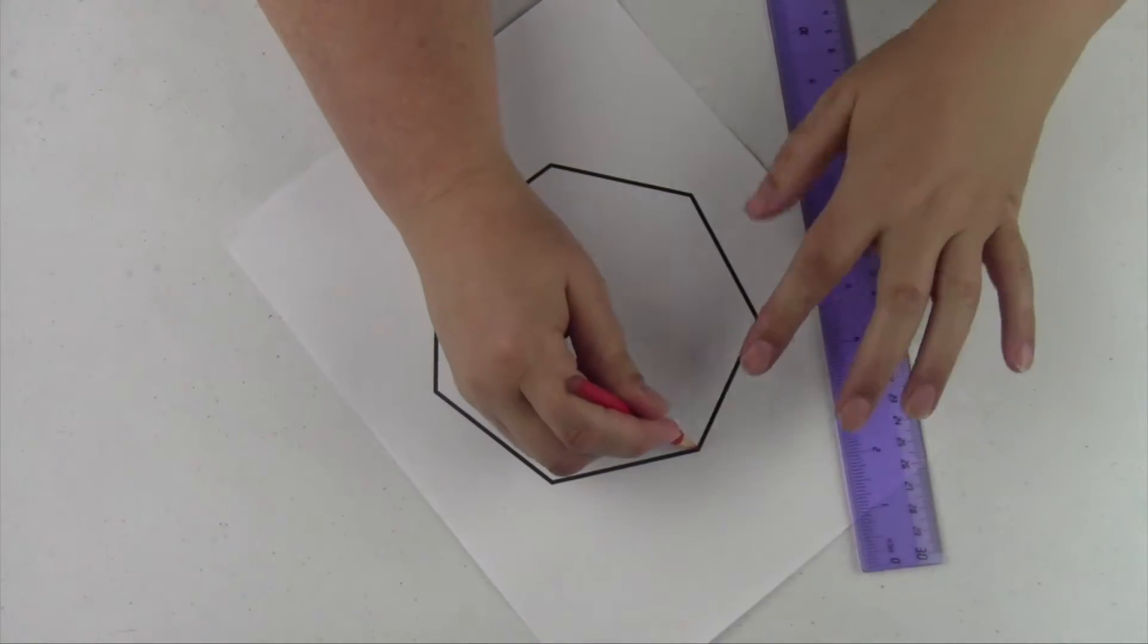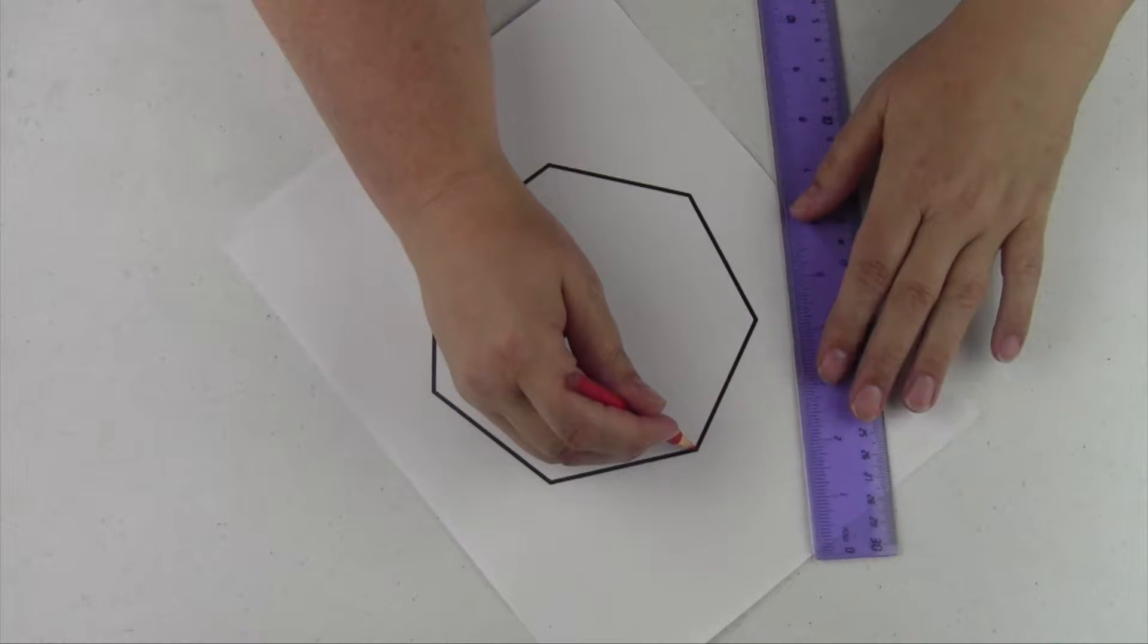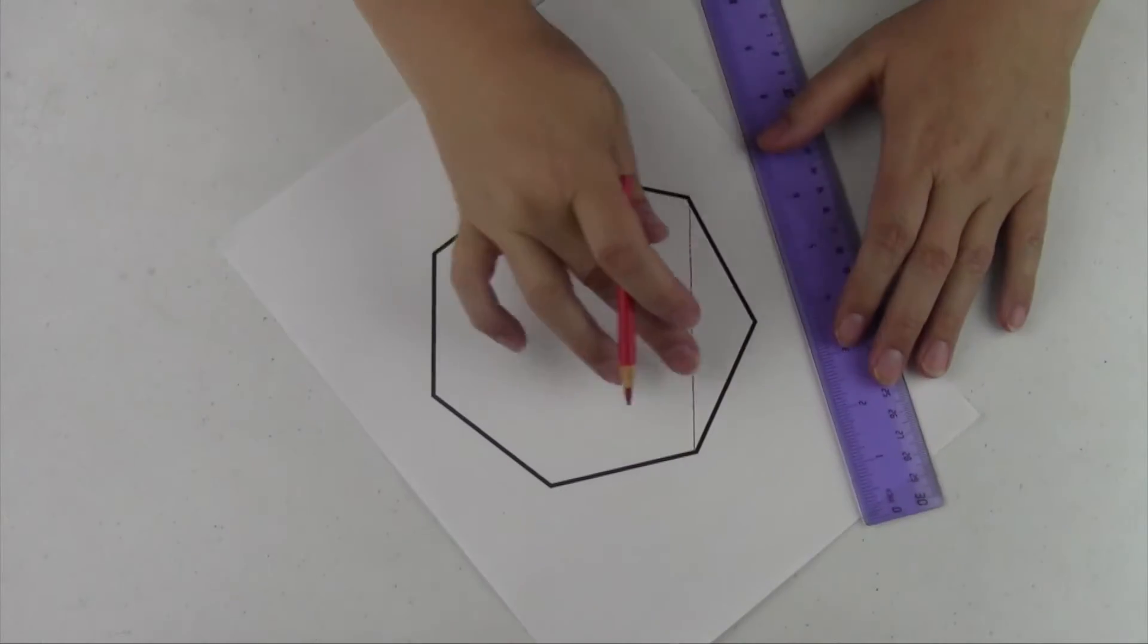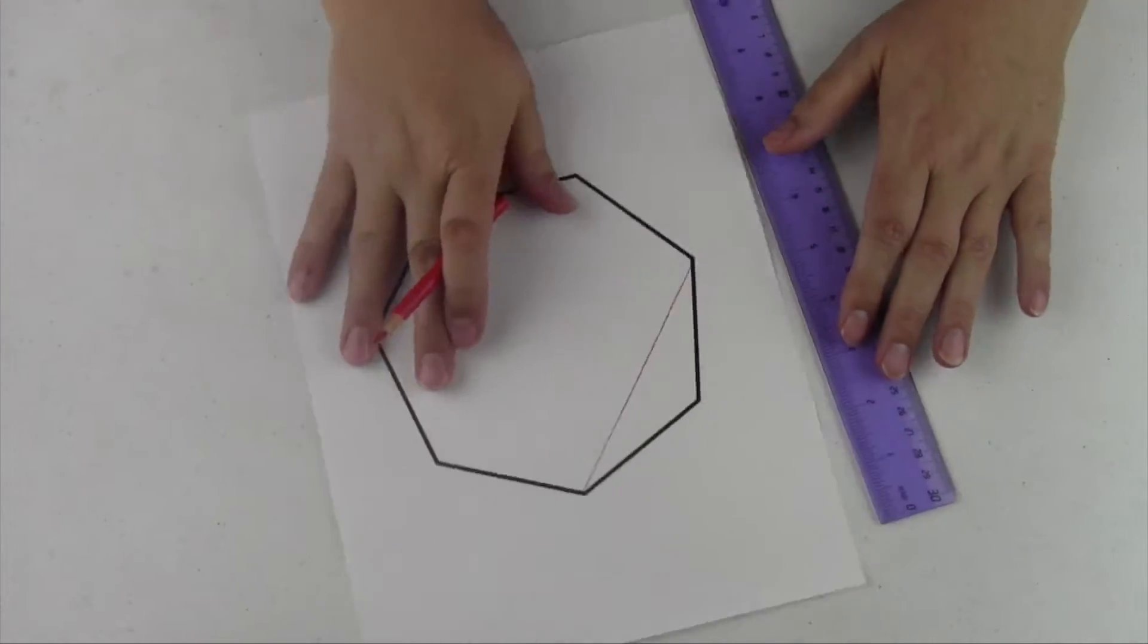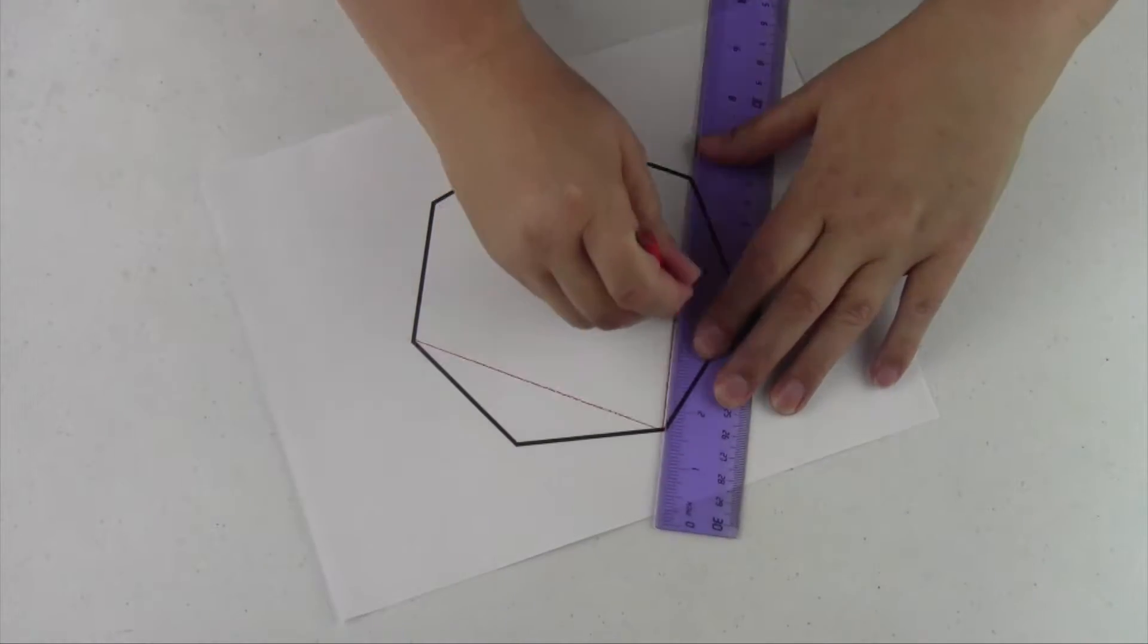The first thing we're going to do is take our pencil and skip one angle. See this one angle? We're just going to line it up with our straightedge and draw a line from angle to angle, skipping that one angle in between. We're going to go through that all the way across, skipping one angle.